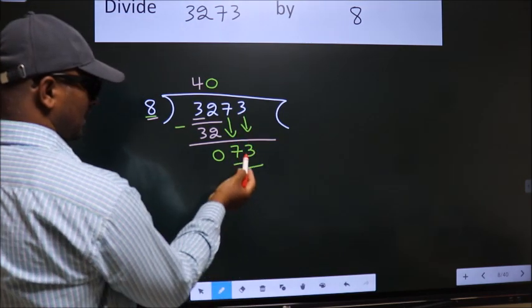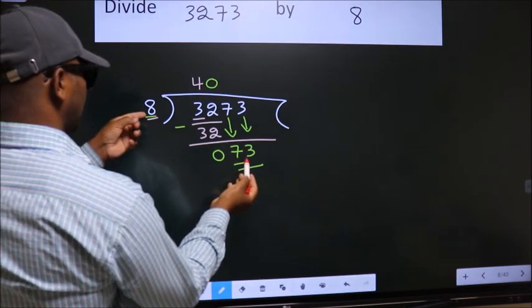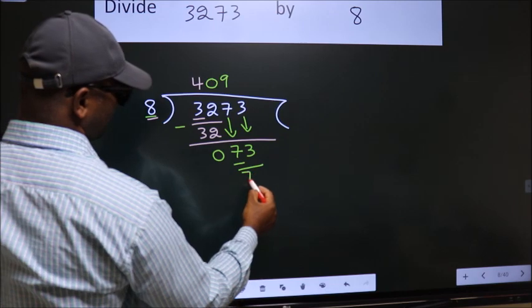So, 73. A number close to 73 in the 8 table is 8 nines 72.